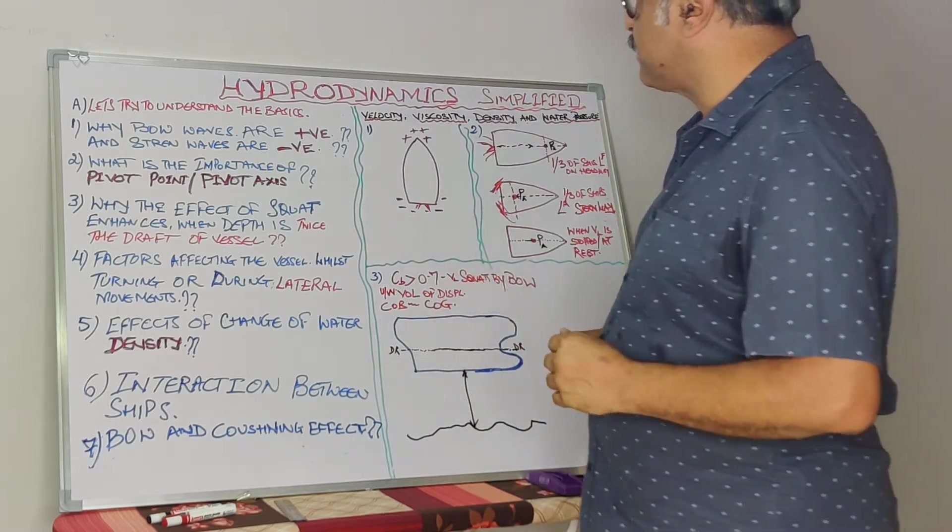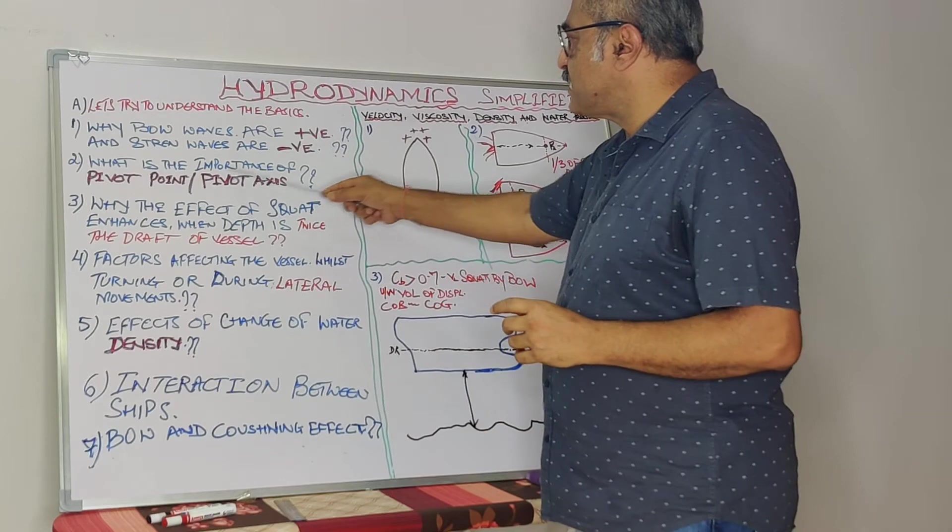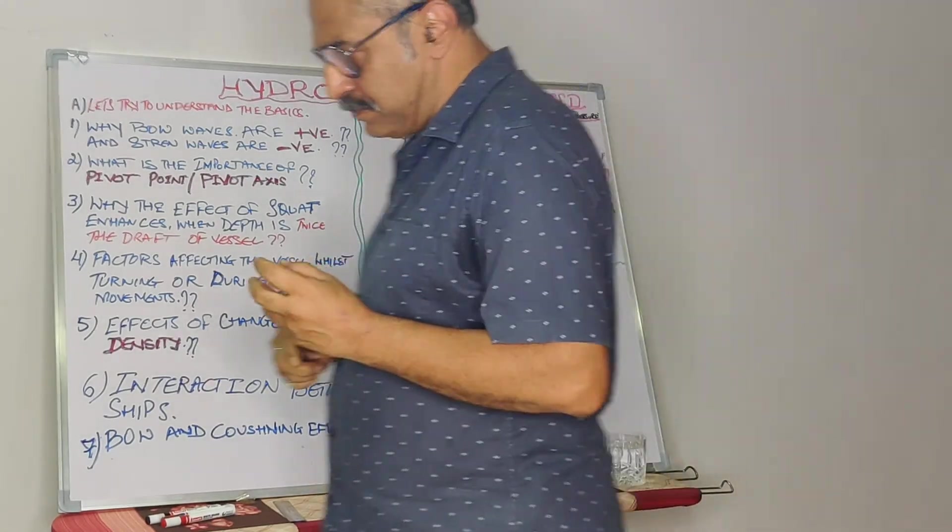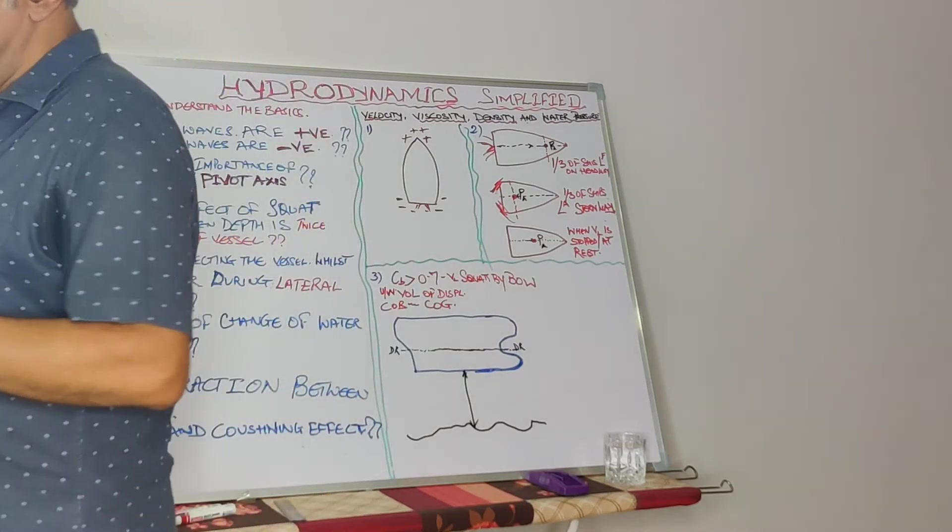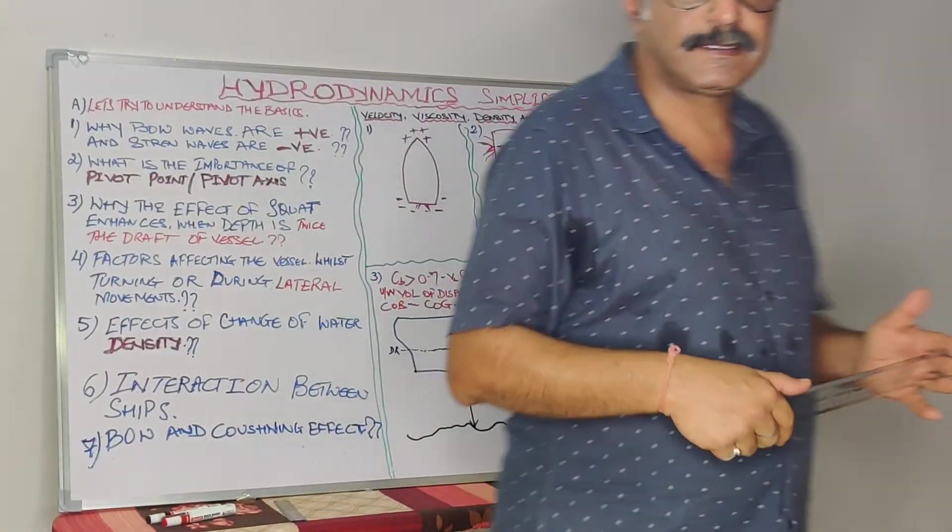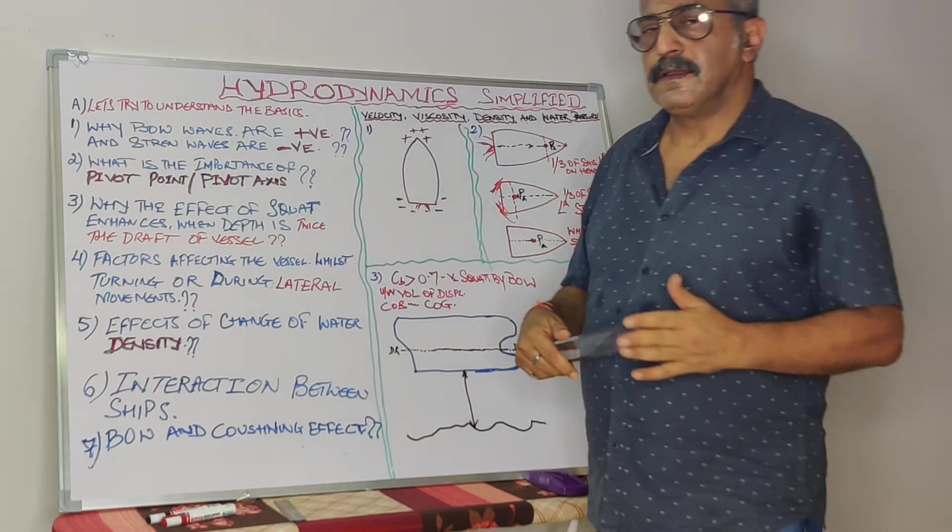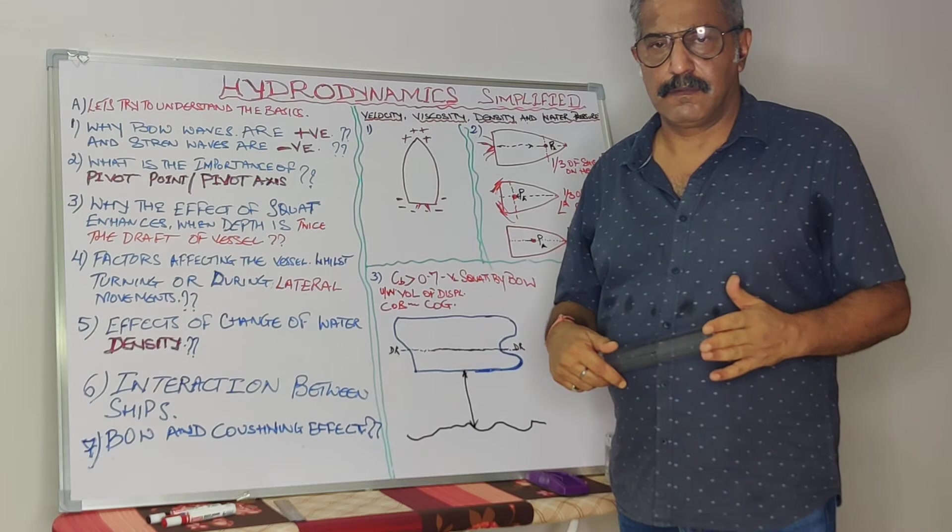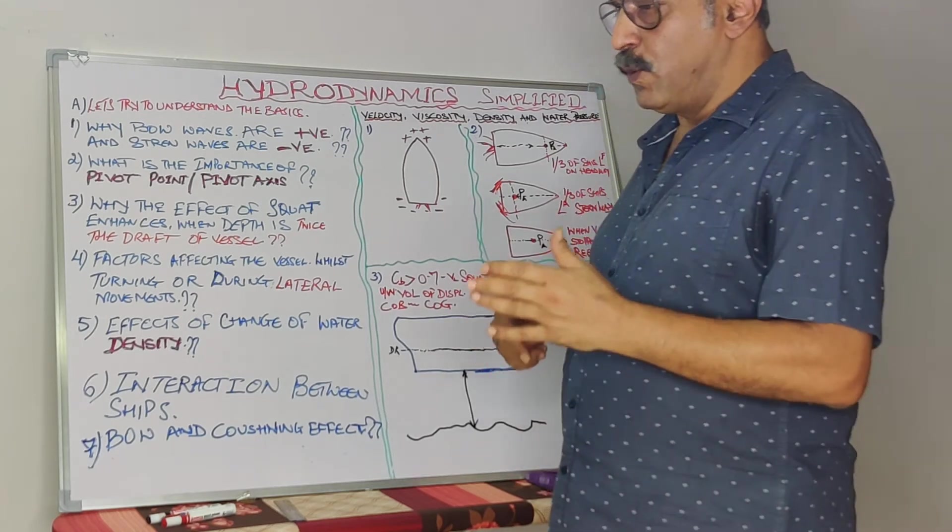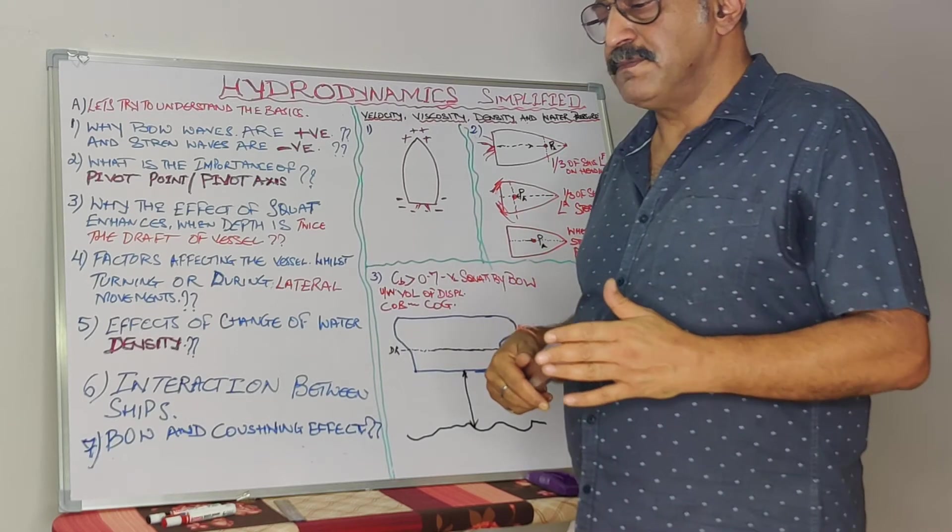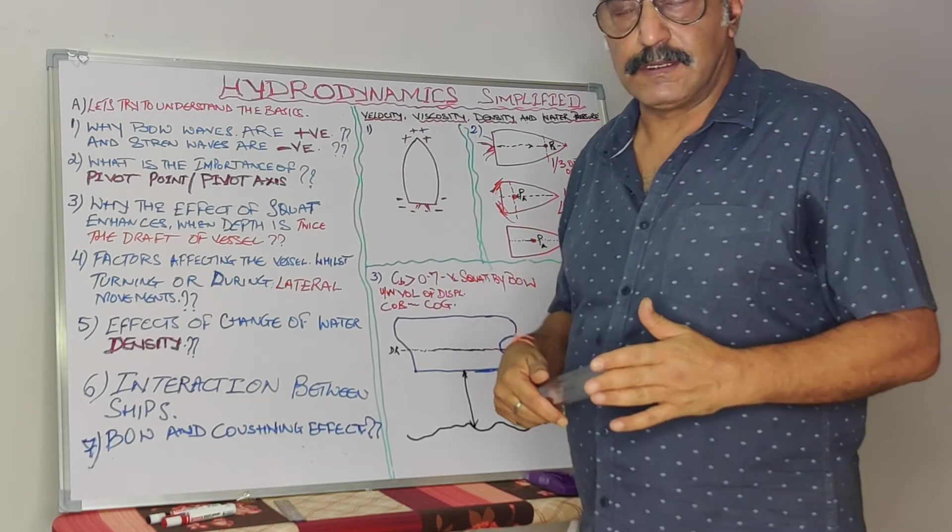Coming to the next point, what is the importance of pivot access or pivot point? Again, we all have read about it. The pivot point, pivot access, is a virtual point, is an imaginary point. The pivot access, when the vessel is stationary, lies approximately at the center of the vessel.